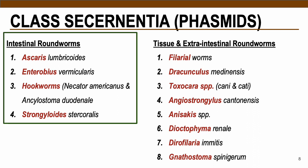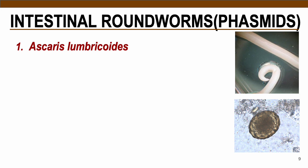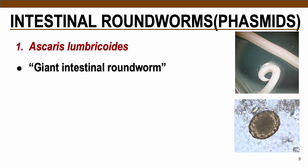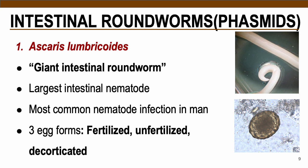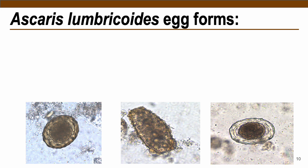The first intestinal roundworm we will discuss is Ascaris lumbricoides, also known as the giant intestinal roundworm — the largest intestinal nematode in humans and the most common nematode infection in man. It has three egg forms: fertilized, unfertilized, and decorticated. Here are sample pictures of the Ascaris lumbricoides egg forms — you may pause the video to assess yourself.